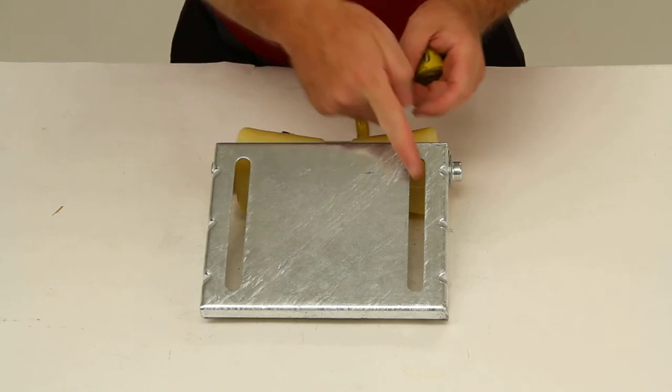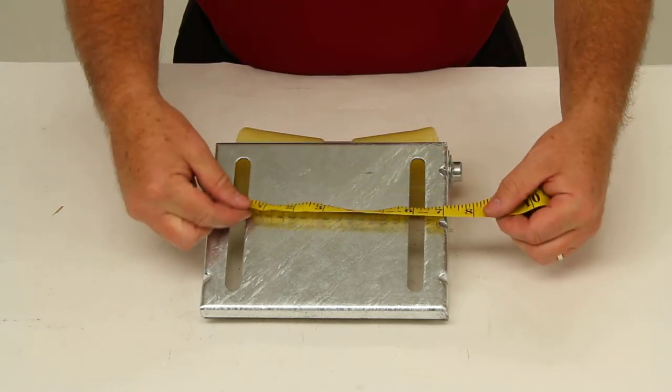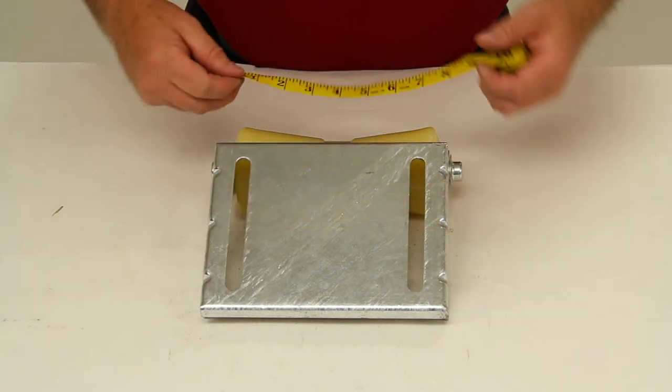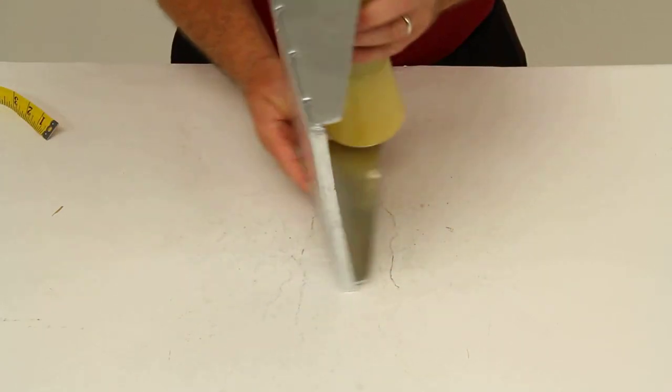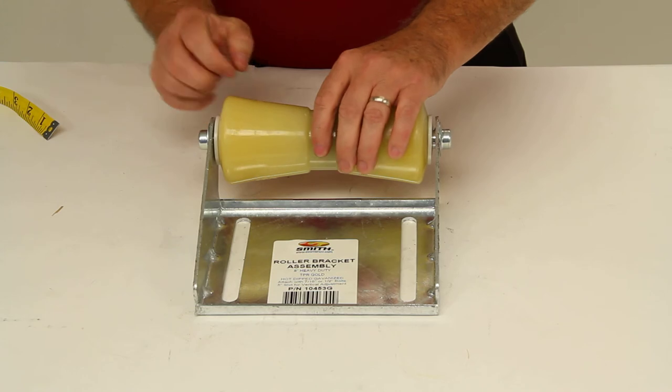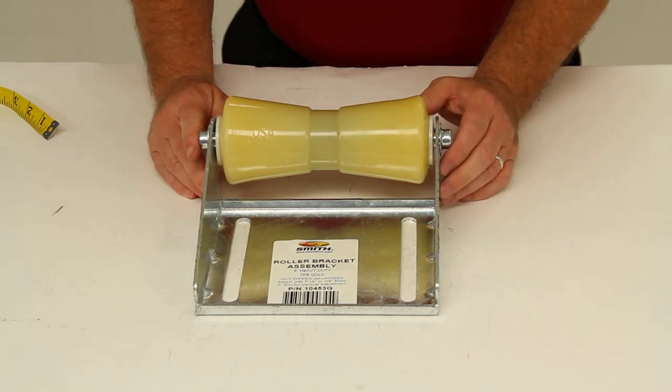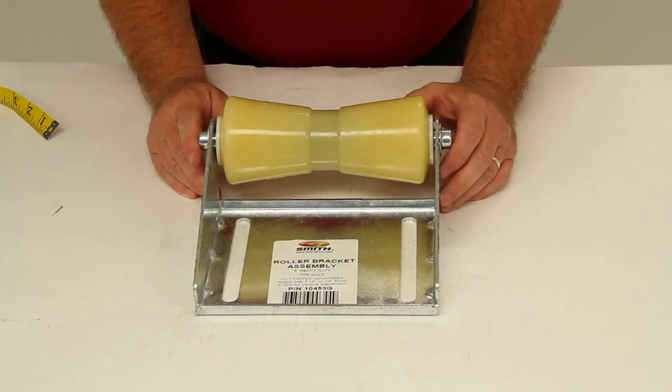The space between them, center to center, is 6 inches. And this part is made in the USA. And that should do it for review on part number CE10453G.